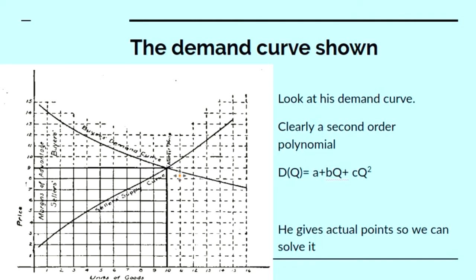Let's look at his demand curve, this curve here, the buyer's demand curve. Now, because it's turning down, sloping down but curved, because it's not a straight line, it must be at least a second-order polynomial. So the function d of q, where q is the quantity, can be expressed as a polynomial, a constant a, plus a constant b, times q, plus a constant c, times q squared. You need at least a second-order polynomial to do that.